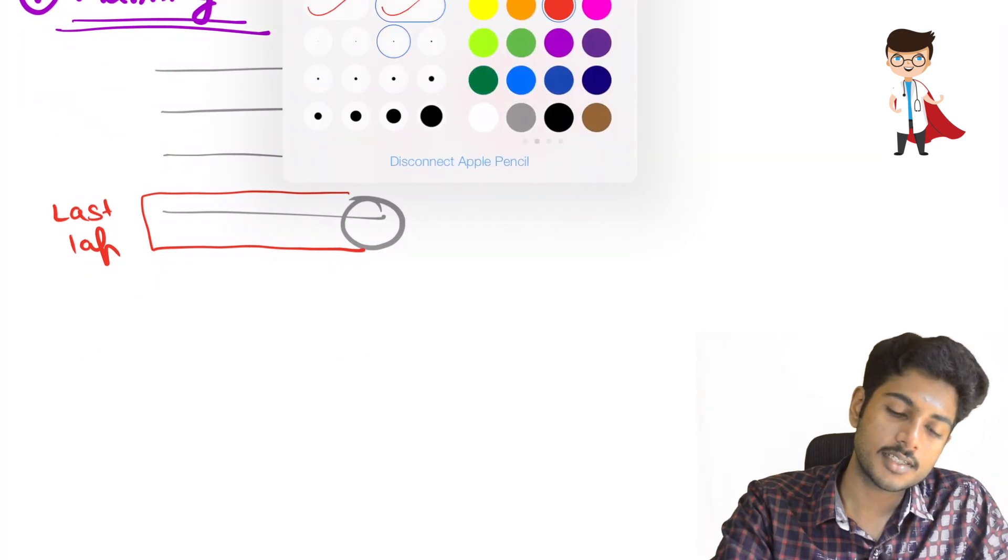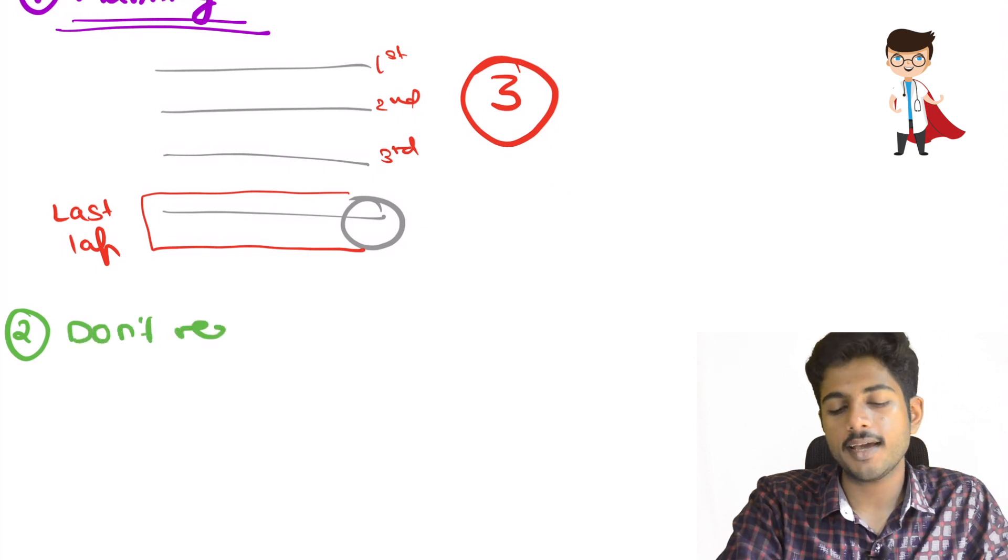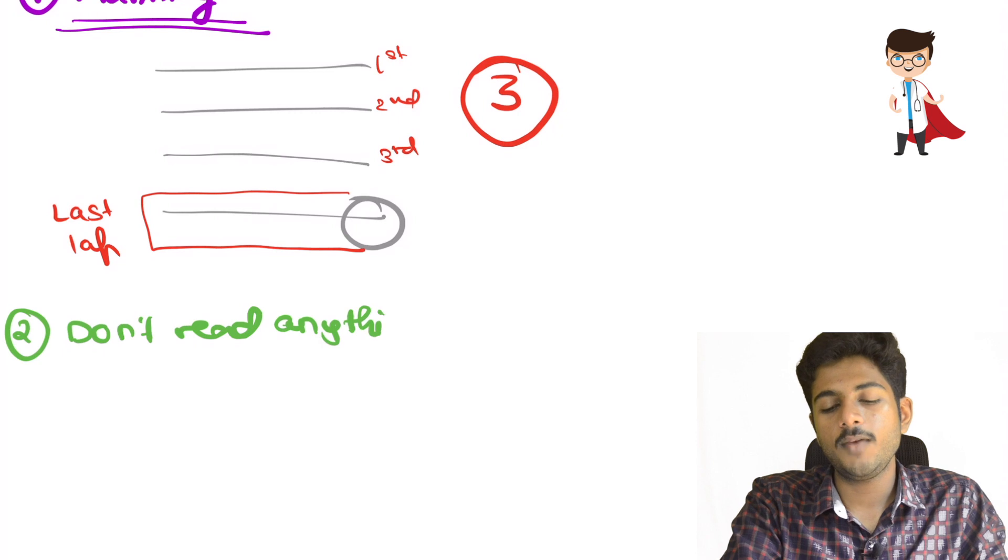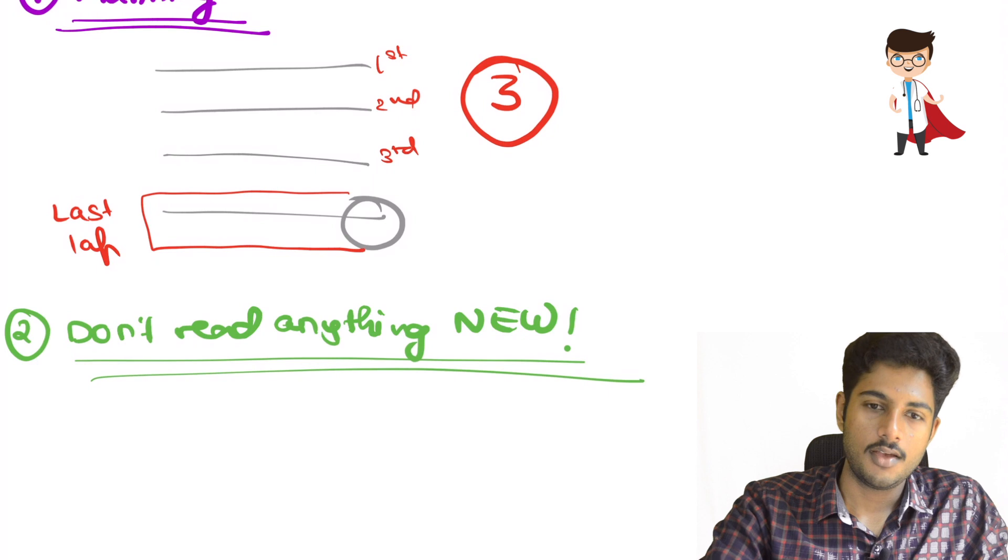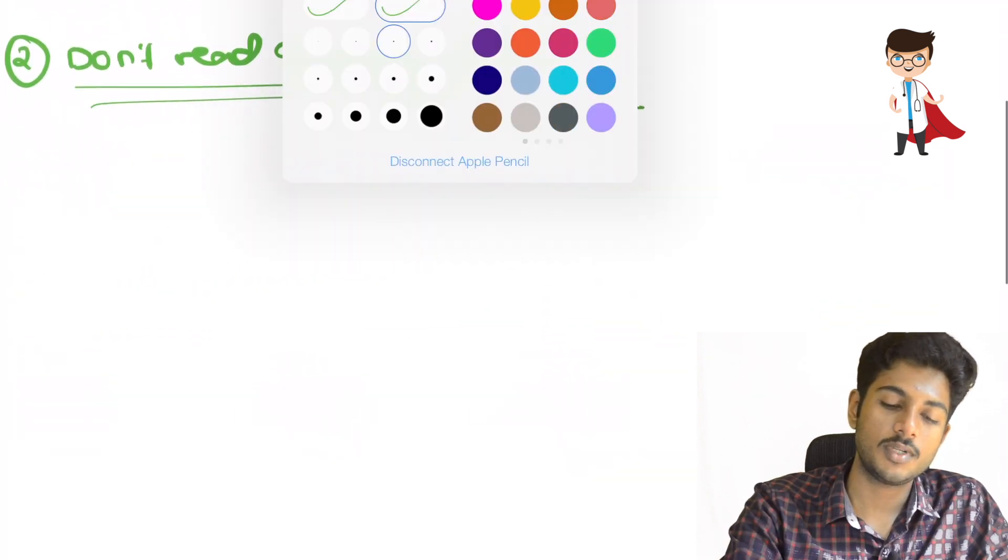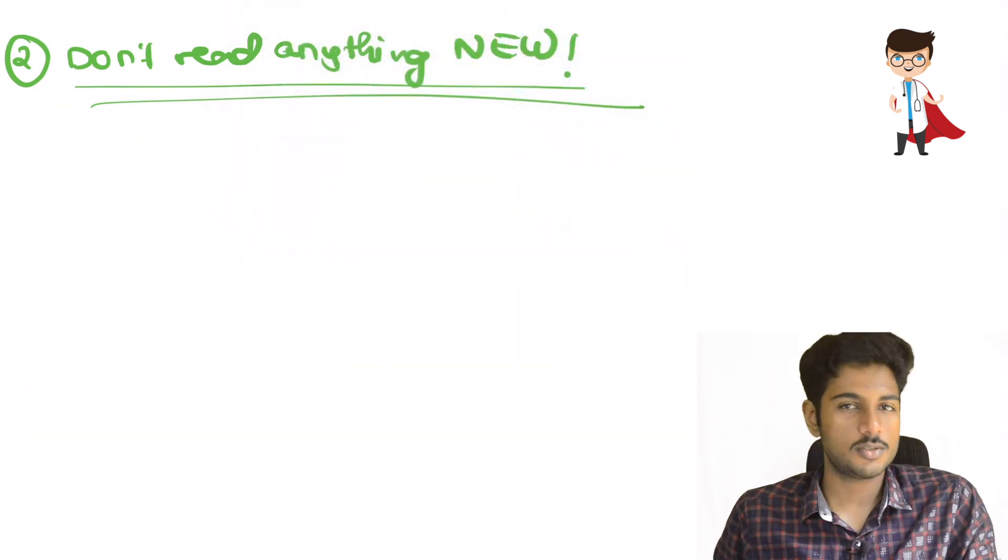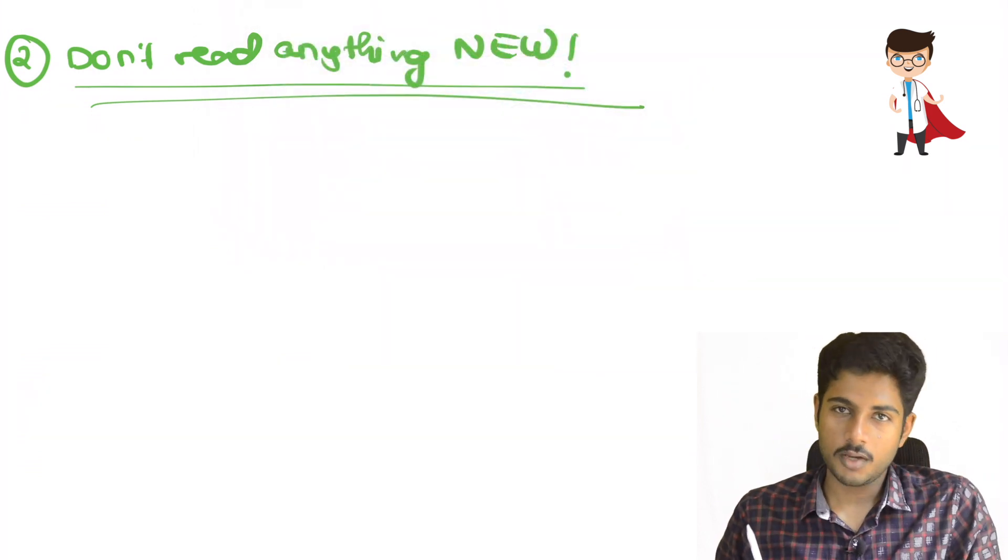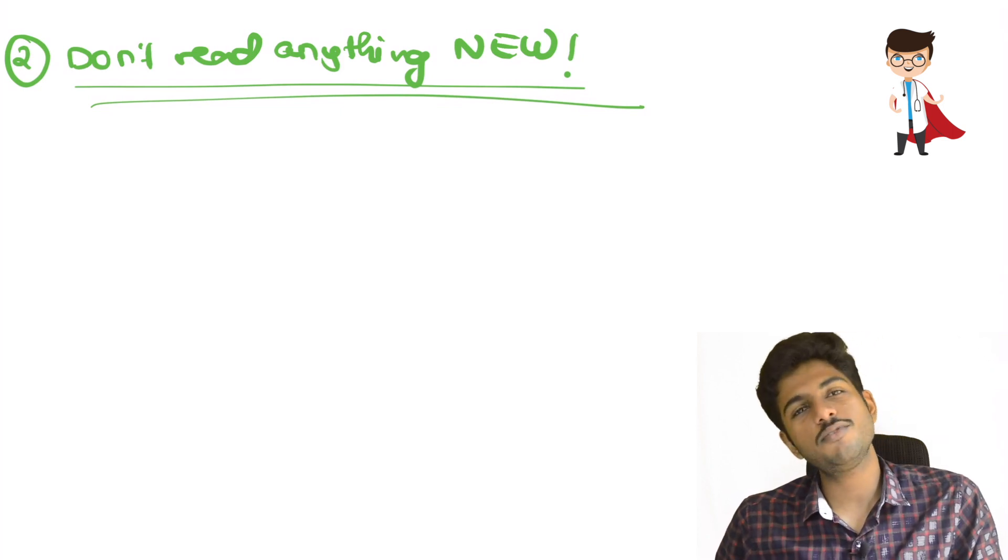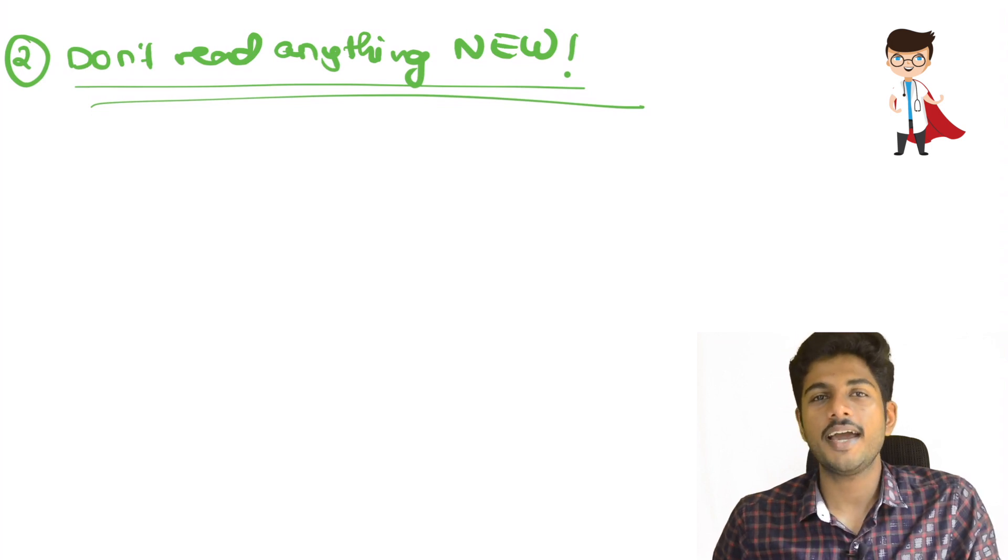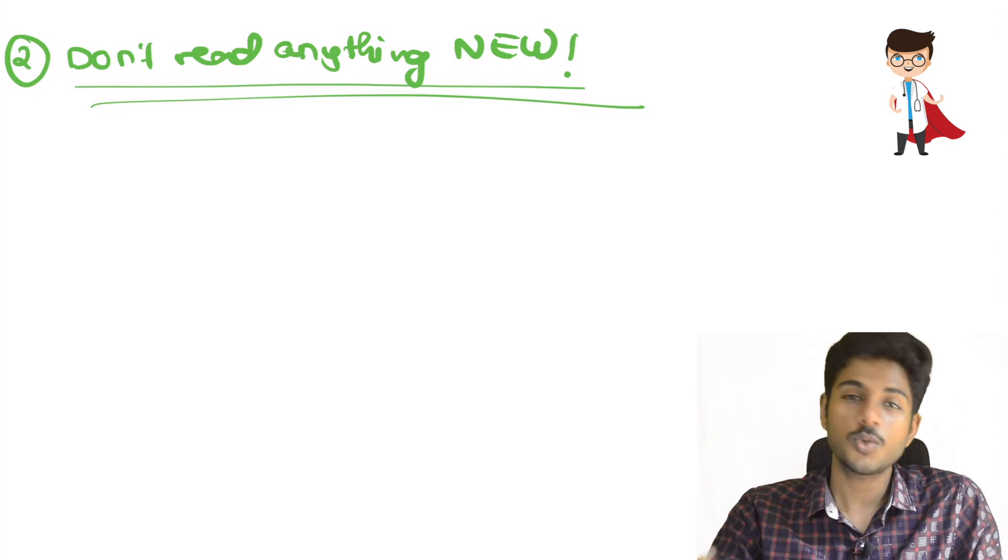The second one I would like to discuss is another important point: don't read anything new. We all have a tendency to study new things, especially in the last month. We hear some of our friends say something, or somebody's video says something new which is important or not. Remember, you don't have enough time. You have only one month left. So give your priority to revising the stuff you have learned, because even if you study new stuff which may be not that high yield, but the things what you studied two or seven months ago was very high yield and if you forget that, there's no use.